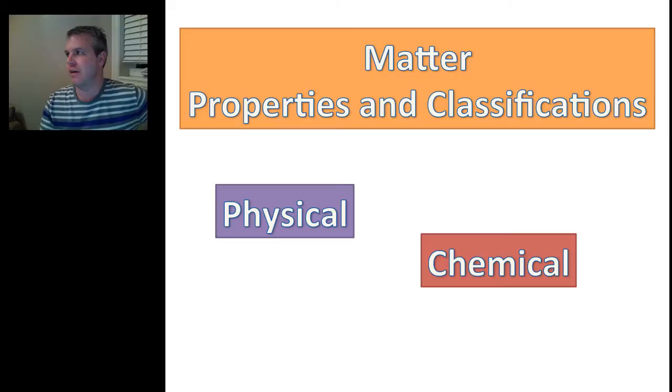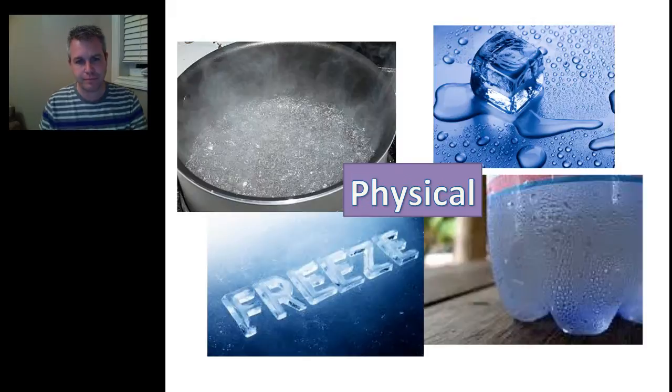And we're looking at properties and classifications of matter. Matter is basically everything that makes up everything in our universe or everything on our planet. And there are different properties and the properties are divided up into two categories and they're physical and chemical. We're going to look at the physical properties that you need to have an understanding of.